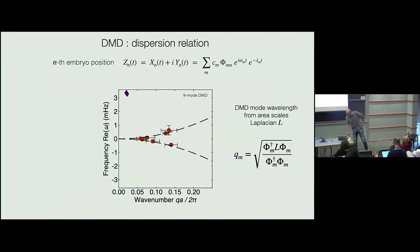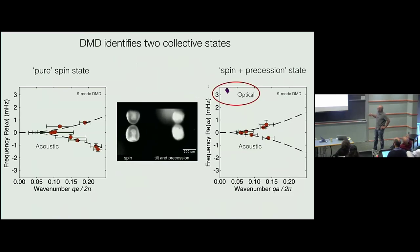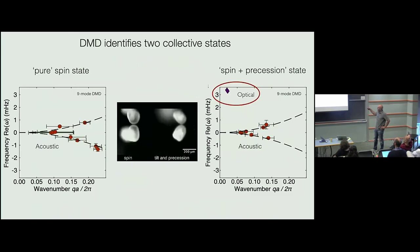This gives us an orthogonal basis. We take our DMD basis and project it against the Laplacian to get a mean wave number for each mode, then measure the frequencies. Depending on which state you're in — pure spin state versus precession state — you either don't see the optical band or you start to see it as well. As you take more modes you get more points, but you have to be more careful estimating mode coefficients because they are more affected by noise.